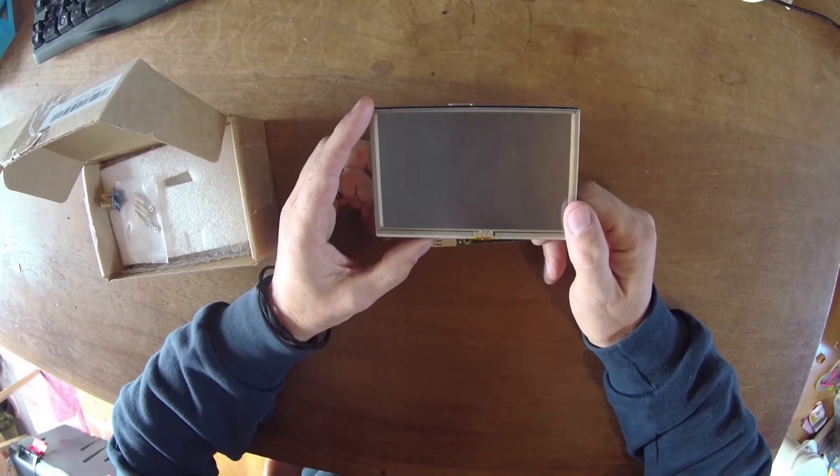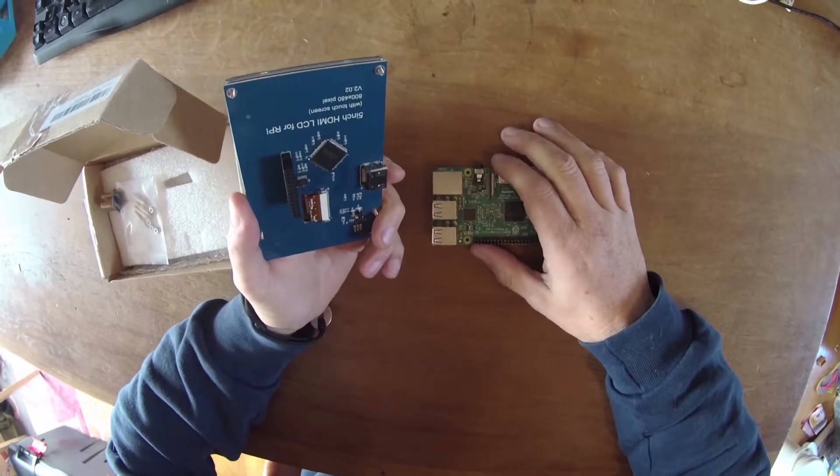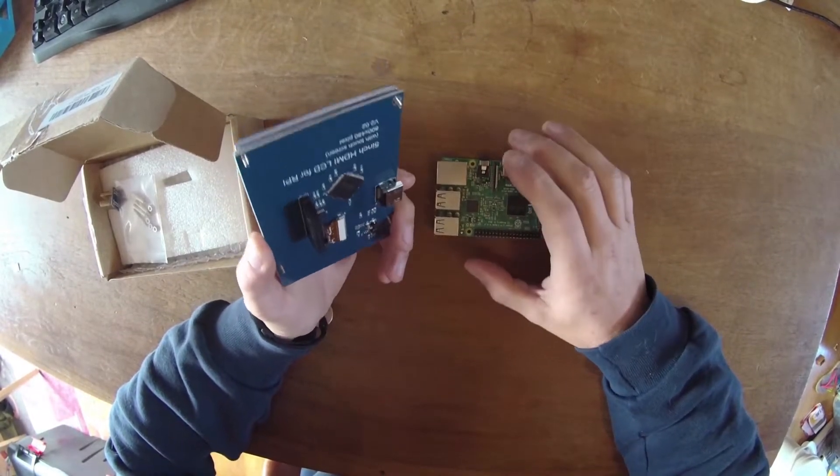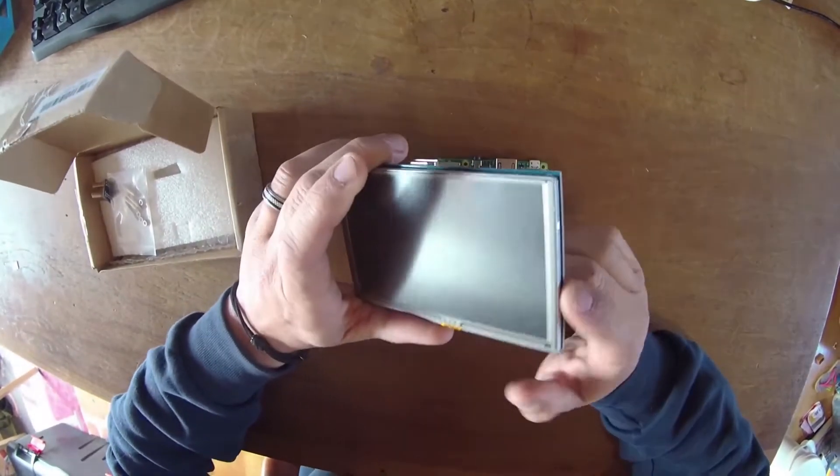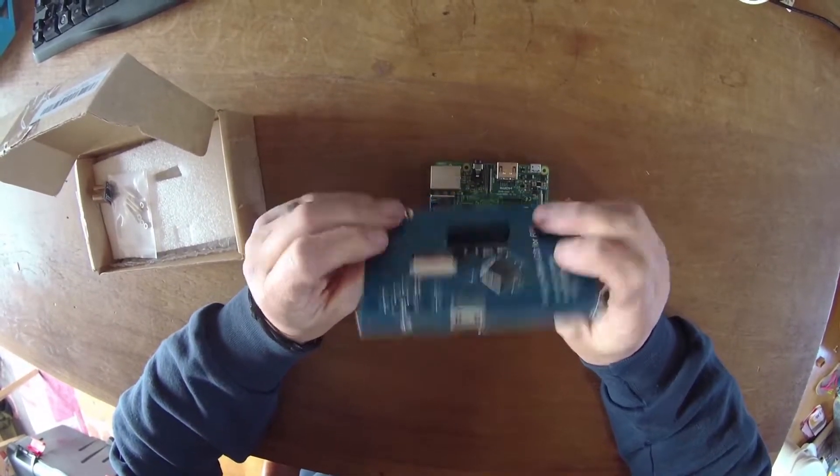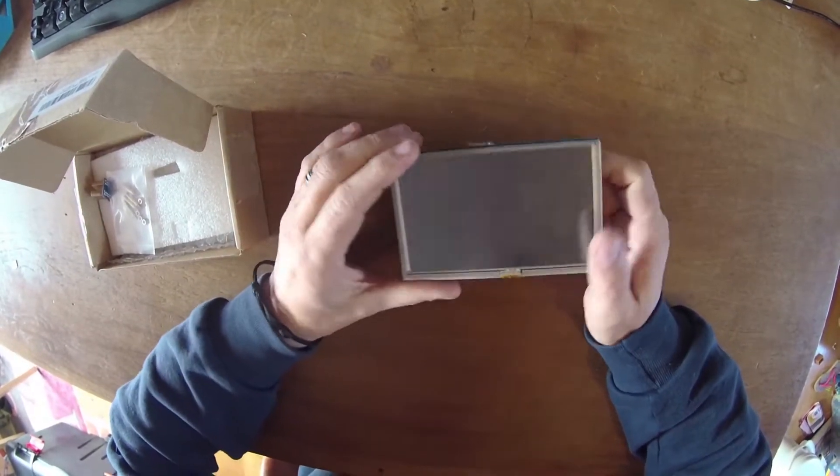So what I did for you: I've downloaded the latest Raspbian system and I've made a pre-built image with the driver for the Banggood five-inch LCD touchscreen. You just have to download the image, burn it, and you can use it. And this is what we're gonna be doing now.